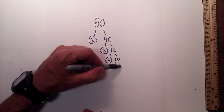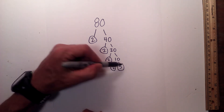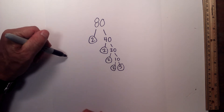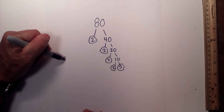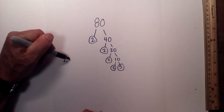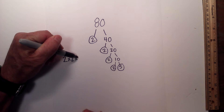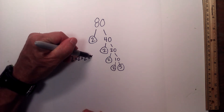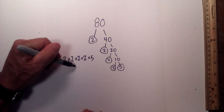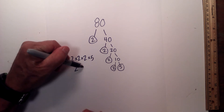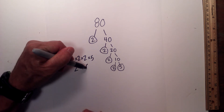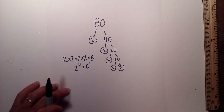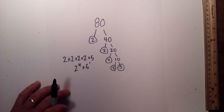And finally 2 times 5 — circle both because they are prime. So the prime factorization of 80 is 2 times 2 times 2 times 2 times 5, or 2 to the 4th times 5 to the 1st. Now let's look at 99.